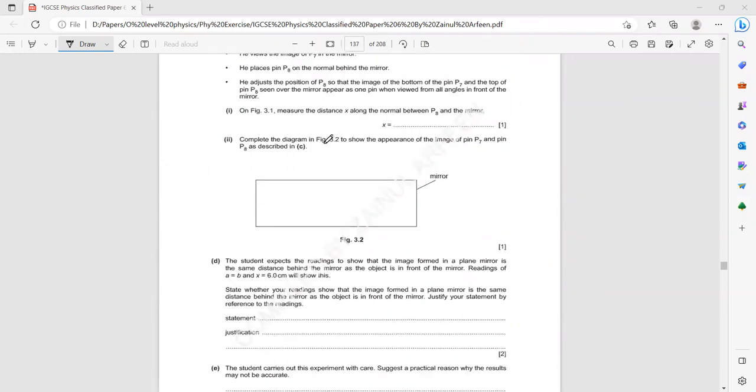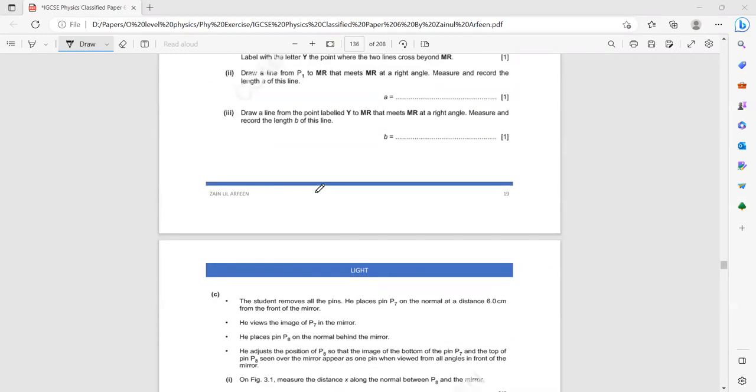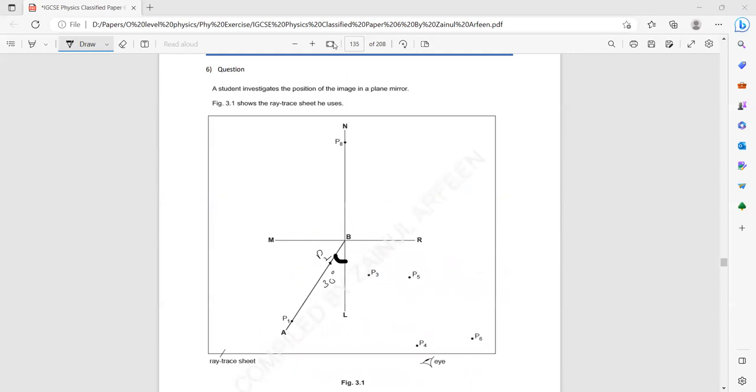Then complete the diagram in figure 7.2, show the appearance of image of P7 and P8. Look, as we said, pin 7 and pin 8 are one over the other, behind each other. So if this was a mirror, if you're looking from the top, this was pin 7, P7, and P8 is just behind the mirror. This is when you're looking from the top. But if you're looking from the side, if you're looking into the mirror, the two pins appear one behind the other. So if this is pin 7, what will be pin 8? The pin 8 will be just behind the other. So we won't see two pins. We'll only see or observe one pin.